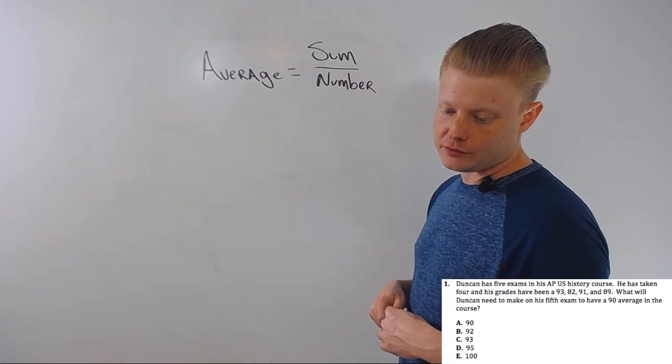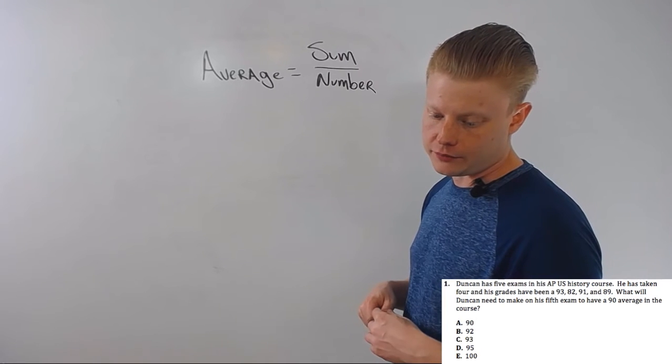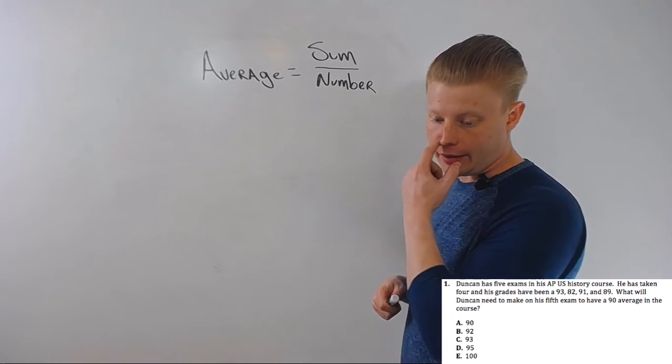Duncan has five exams. He has taken four and his grades have been, you know, all that stuff. What does he need to have a 90 average in the course?